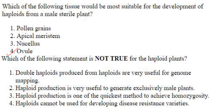Which of the following statements is not true for haploid plants? Double haploids produced from haploids are useful for genome mapping — true. Haploid production is useful to generate exclusive male plants — true. Haploid production is one of the quickest methods to achieve homozygosity — true. But 'haploids cannot be used for developing disease resistance varieties' — that is not true, because haploids can be used for developing disease resistance varieties.